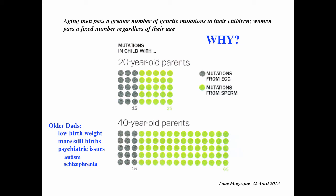This is most likely because there's greater likelihood for breakdown in molecular mechanisms like DNA repair or replication since gametogenesis is occurring throughout a man's reproductive life, whereas gametogenesis occurs early in fetal life in females and is arrested for most of a woman's reproductive life.